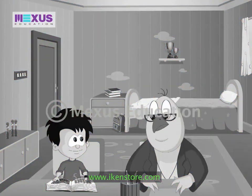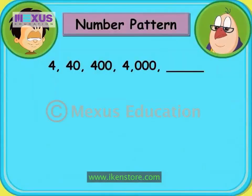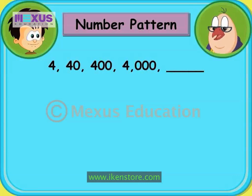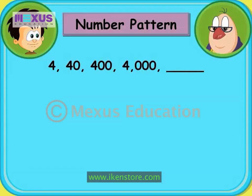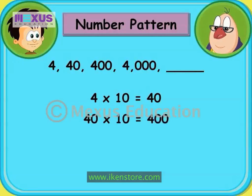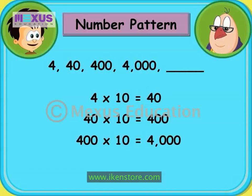Do you know that even numbers follow patterns? Let me show you an example. Can you identify the pattern rule here? 4, 40, 400, 4000. If you look carefully, you will see that the previous number, when multiplied by 10, gives the next number. 4 multiplied by 10 is equal to 40. 40 multiplied by 10 is equal to 400. 400 multiplied by 10 is equal to 4000. Can you guess what the next number is? The next number is 4000 multiplied by 10, that is 40,000.